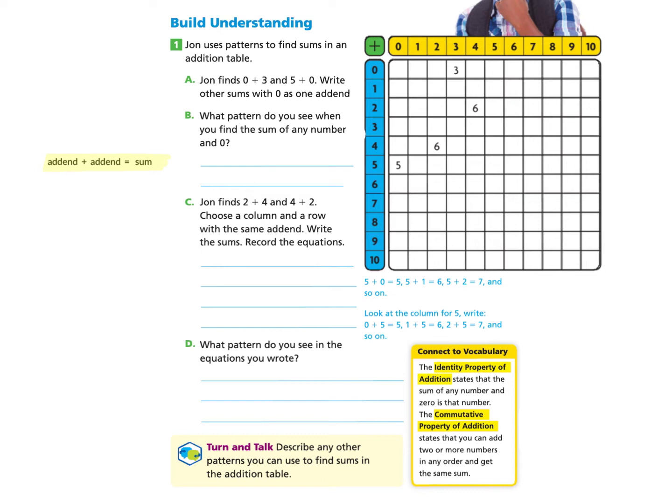Part A, John finds 0 plus 3 and 5 plus 0. We see that he found 0 plus 3 and he wrote in his answer here 3. Then he also found 5 plus 0 and he wrote his answer in here 5. So it asks us to write other sums with 0 as one addend.